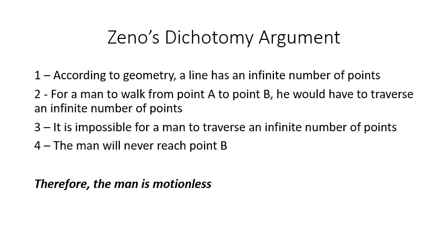So let's review Zeno's overall argument. According to geometry, a line has an infinite number of points. For a man to walk from point A to point B, he would have to traverse an infinite number of points. But it is impossible for a man to traverse an infinite number of points. Therefore, the man will never reach point B.